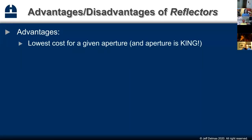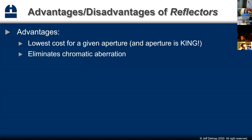For reflectors, you can kind of flip the advantages and disadvantages of refractors. The big advantage is that it's the lowest cost for any given aperture. Since aperture is king, reflectors dominate the world of amateur astronomy. That used to be utterly true in the 80s and 90s and early 2000s. But with modern astrophotography systems far more sensitive than your eye, refractors have made a huge comeback because of the clear, sharp views they produce. Reflectors also eliminate chromatic aberrations, which is why they're cheaper.